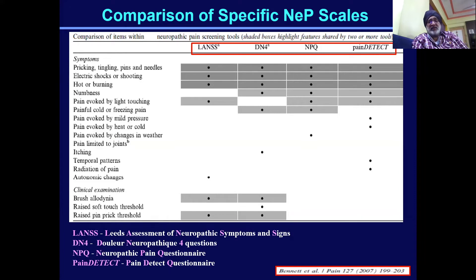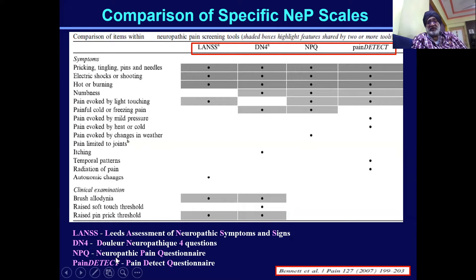For neuropathic pain specifically, there are certain scales which are very specific: LANSS (Leeds Assessment of Neuropathic Symptoms and Signs), DN4 (Douleur Neuropathique 4 questions), the Neuropathic Pain Questionnaire, and Pain Detect. These specific scales also provide very good specificity and sensitivity for assessment as well as post-treatment response evaluation.